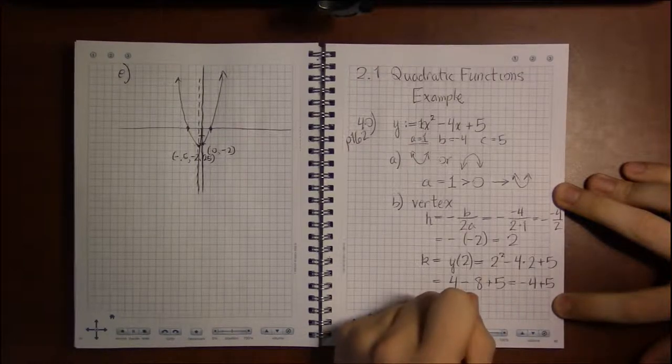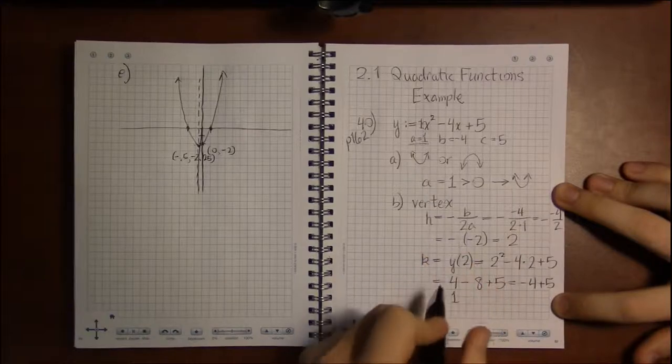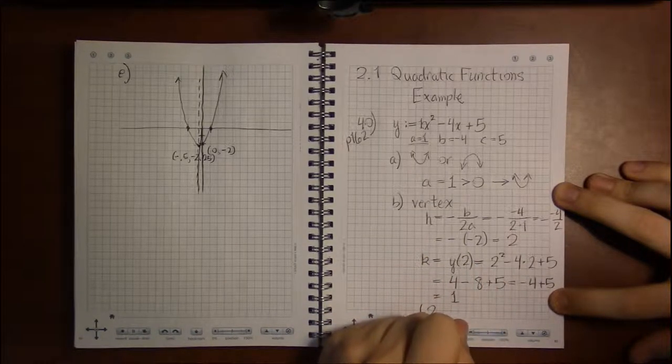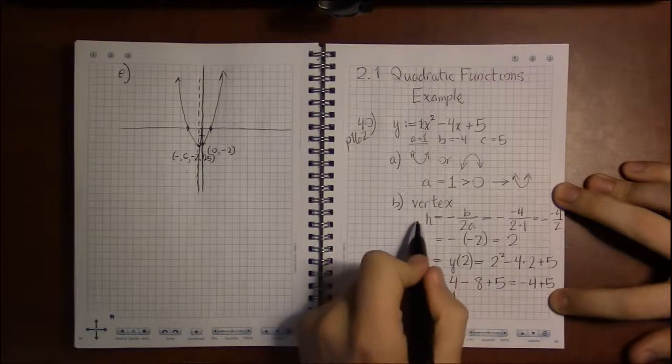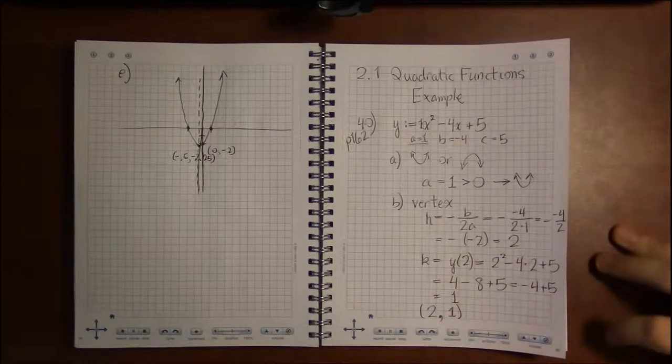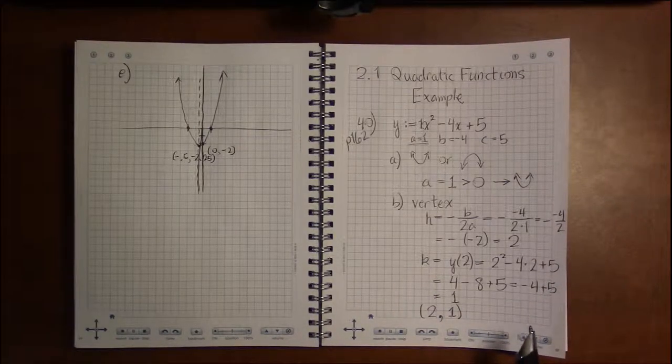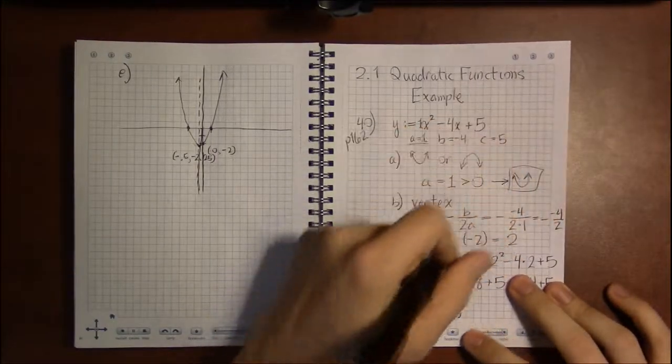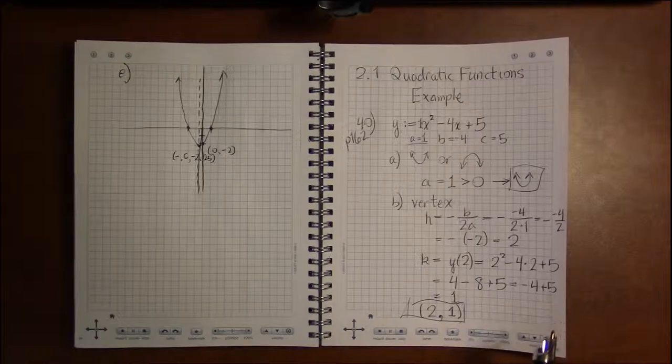4 minus 8 is minus 4, adding 5 to minus 4 leaves us with 1. So our vertex is the point 2 comma 1. The x-coordinate of the vertex is h, the y-coordinate of the vertex is k.